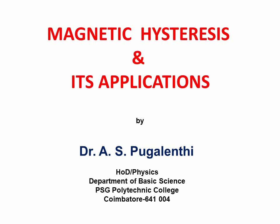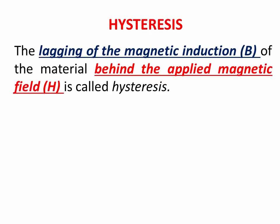In this video we are going to learn what is magnetic hysteresis, the hysteresis loop, and its applications. Hysteresis is the lagging of the magnetic induction, denoted as B, of the material behind the applied magnetic field, denoted as H. Here, lagging means retain — or simply, residual nature. There are two magnetic fields involved.